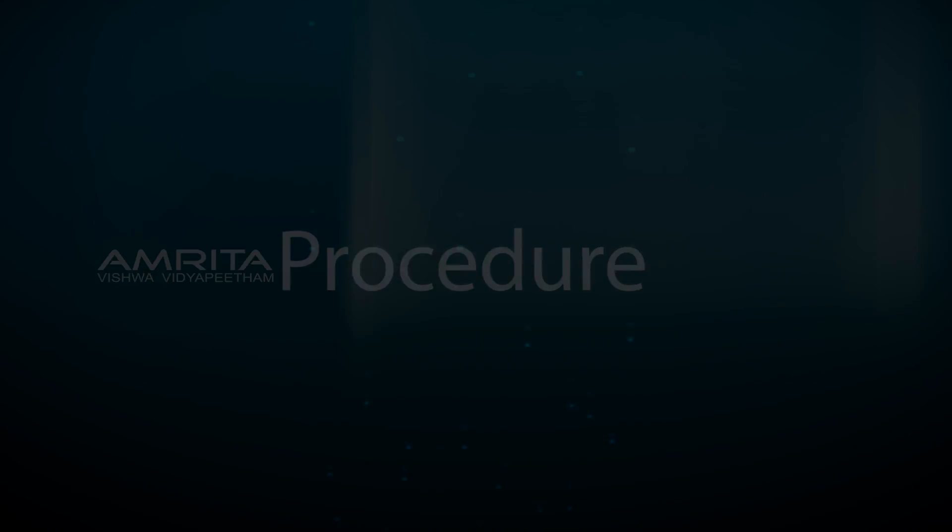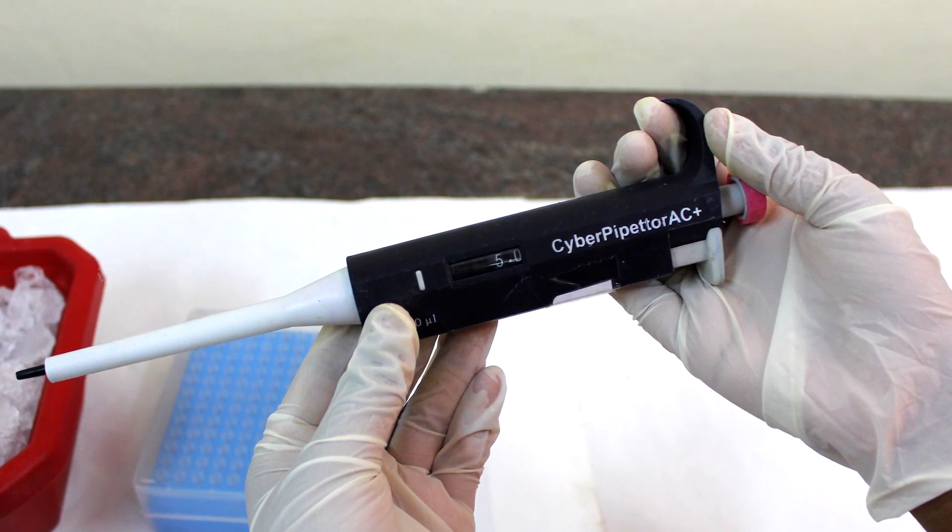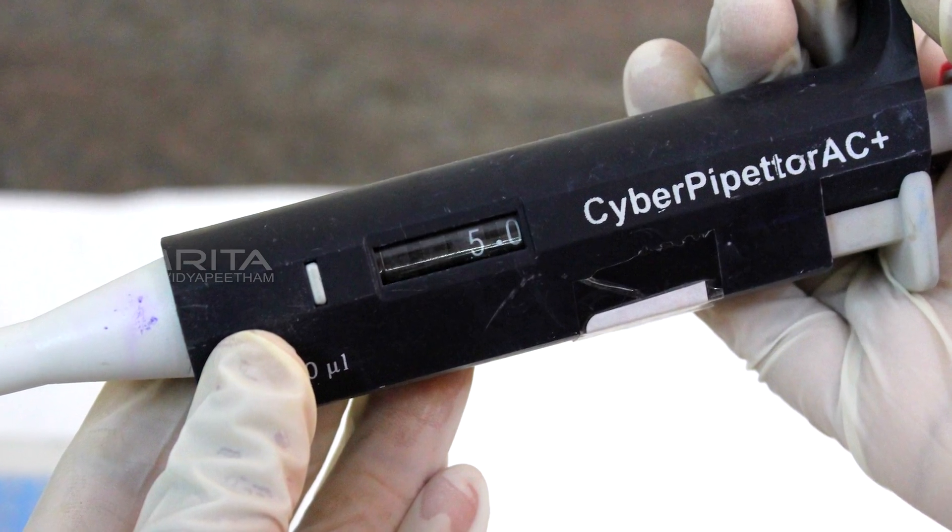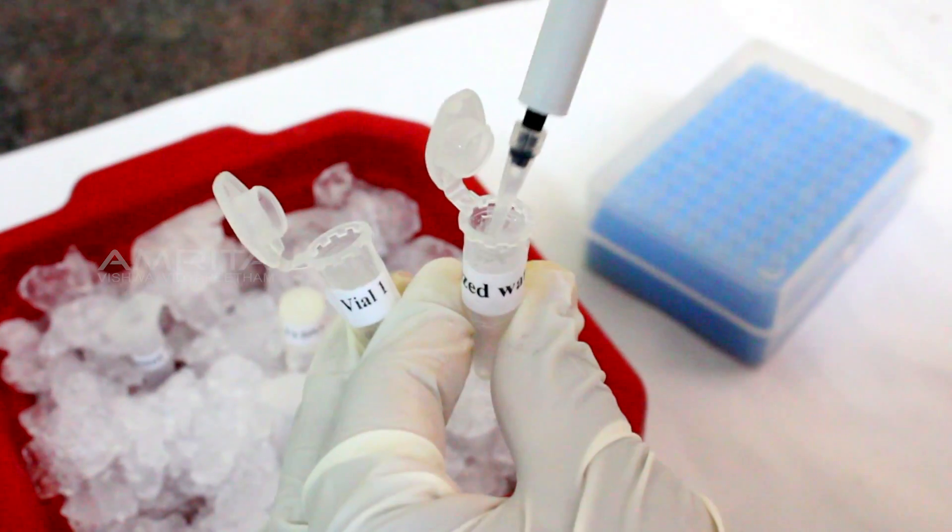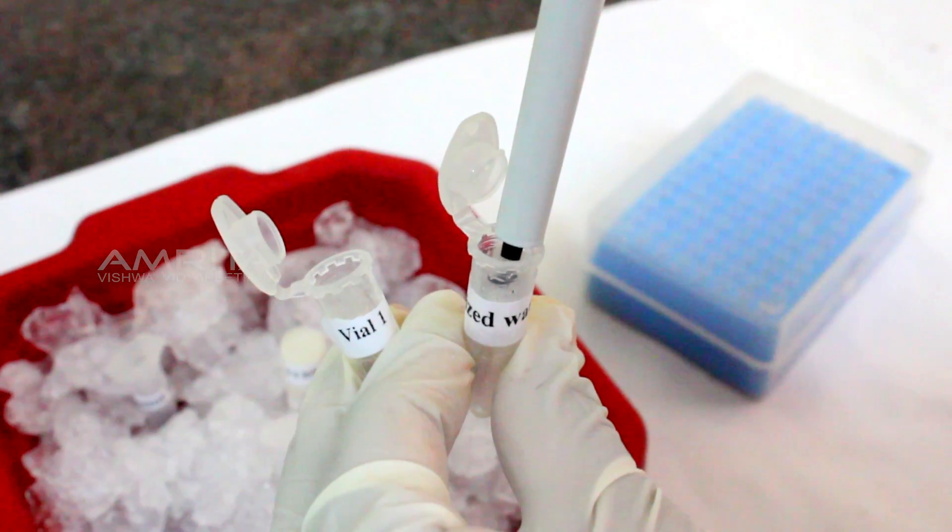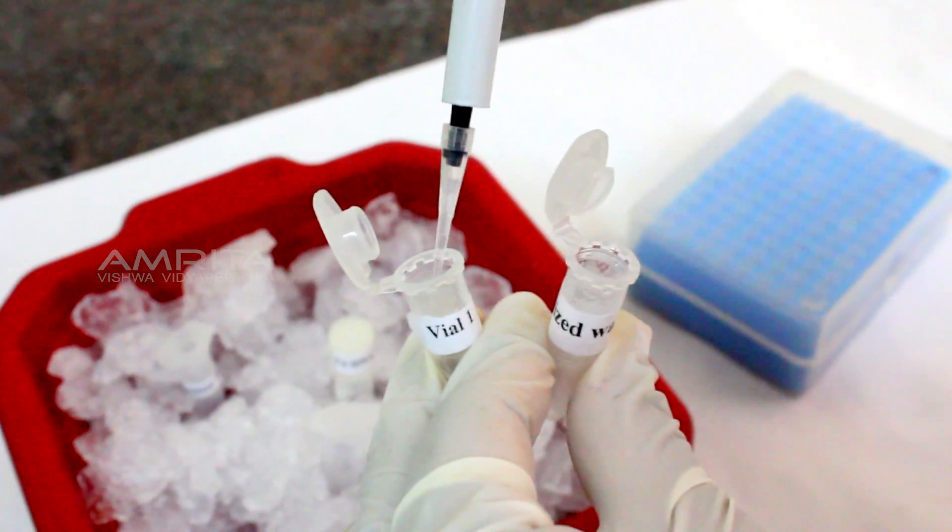Procedure: Take a 10 microlitre micropipette and adjust to 5 microlitre. Insert a fresh micropipette tip into it and transfer 5 microlitre of deionized water to an empty vial labeled vial 1.